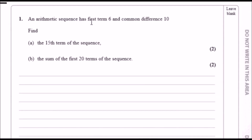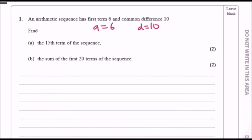An arithmetic sequence has first term 6 and common difference 10. So note this down: the first term a is 6 and the common difference d is 10. Now find the 15th term of the sequence and the sum of the first 20 terms.